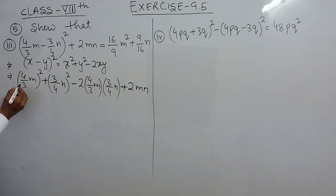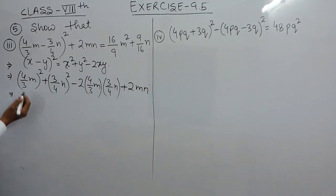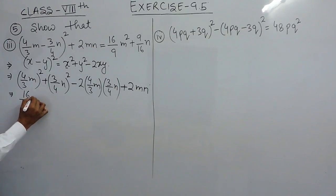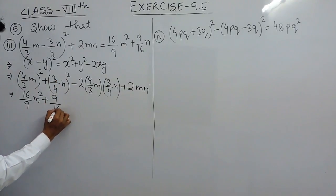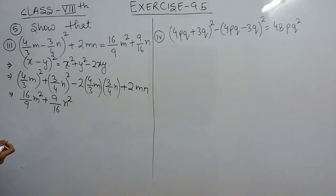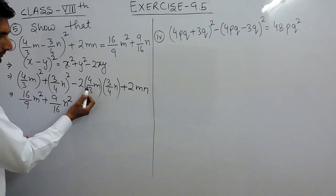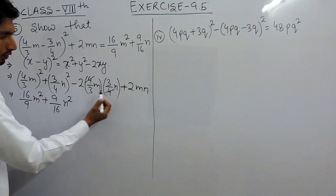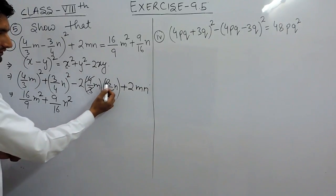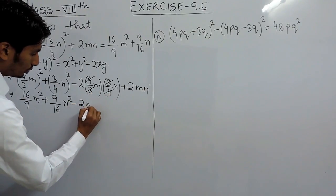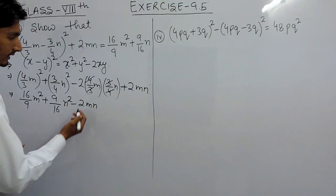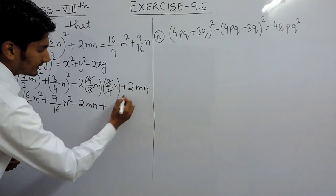Now let us further solve this. 4 upon 3m square means the square will apply to all the constants and the variable. So 4 square is 16 upon 3 square is 9, and this is m square; plus 3 square is 9 upon 4 square is 16, and n square. Now to solve this, I have to multiply these terms — 4 and 4 can be cancelled, 3 and 3 can be cancelled, and the remaining term is 2mn minus 2mn.